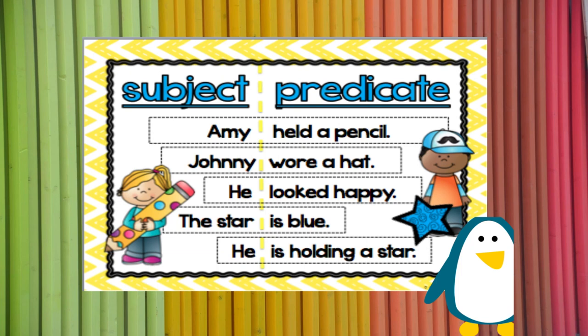He looked happy. He is the subject. Looked happy is the predicate. The star is blue. The star is the subject. Is blue is the predicate.